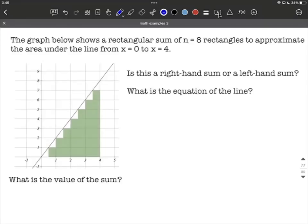Okay, we're given the graph of a line and it shows a rectangular sum of eight rectangles that are being used to approximate the area between the curve, this line, and the x-axis or the area under the graph between 0 and 4.